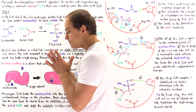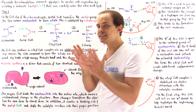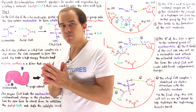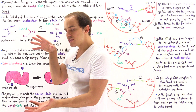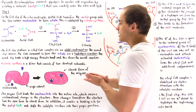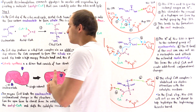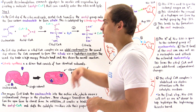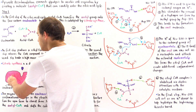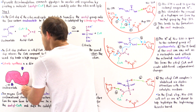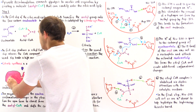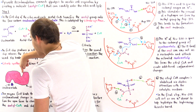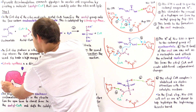Citrate synthase, the enzyme catalyzing step one of the citric acid cycle, is a dimer enzyme consisting of two identical subunits. Each subunit contains three domains: two outer domains that are essentially identical and one intermediate domain. Active sites are found adjacent to each of the outer domains, right next to those domains.